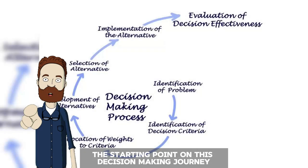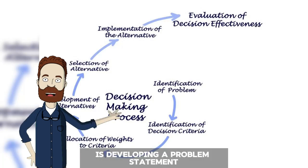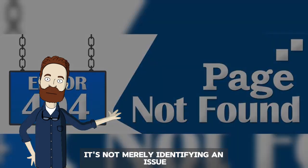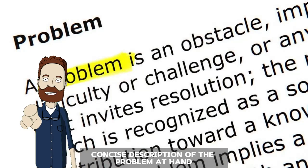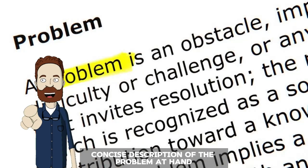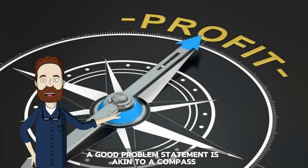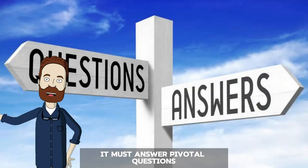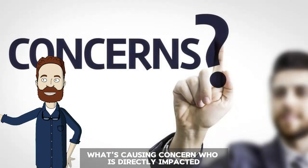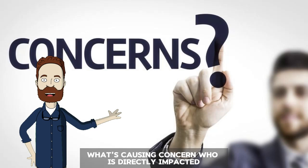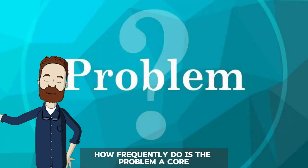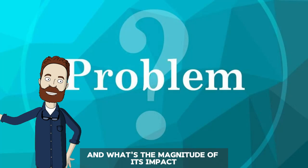The starting point on this decision-making journey is developing a problem statement. It's not merely identifying an issue — it's about crafting a clear, concise description of the problem at hand. A good problem statement is akin to a compass, guiding us through the decision-making process. It must answer pivotal questions: What's causing concern? Who is directly impacted? And are there indirect consequences? How frequently does the problem occur, and what's the magnitude of its impact?